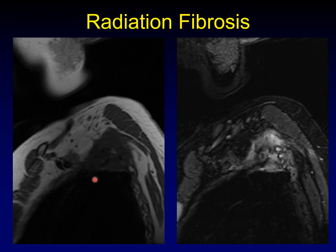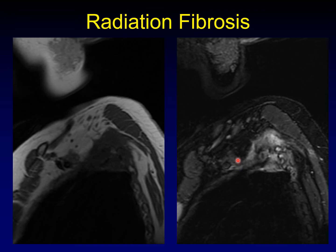We look to our T2-weighted images. The larger mass is heterogeneously bright on T2, just as you'd expect an aggressive tumor to be. The radiation fibrosis, however, is T2 dark. Tumor is T2 bright, radiation is T2 dark — because radiation fibrosis is mostly fibrous tissue, and we expect that to be dark on both T1 and T2.